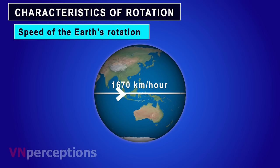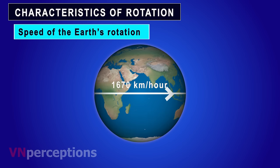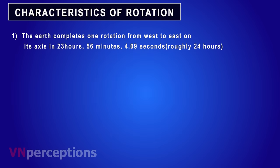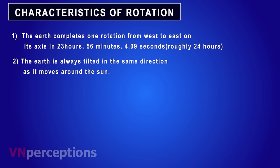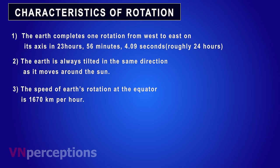To sum up the characteristics of rotation: the earth completes one rotation from west to east on its axis in 23 hours, 56 minutes, and 4.09 seconds — that is, roughly 24 hours. The earth is always tilted in the same direction as it is moving around the sun. And the speed of the earth's rotation at the equator is 1670 kilometers per hour.